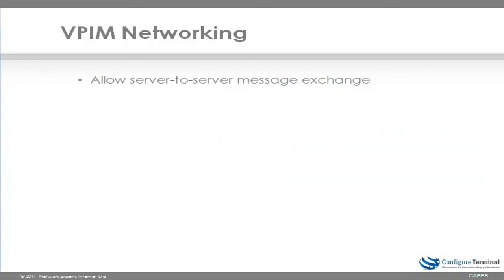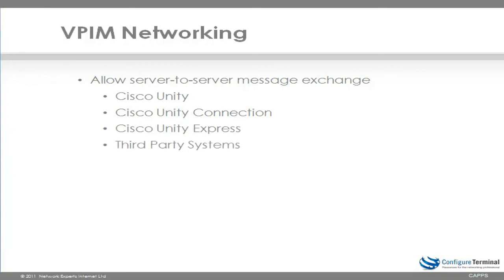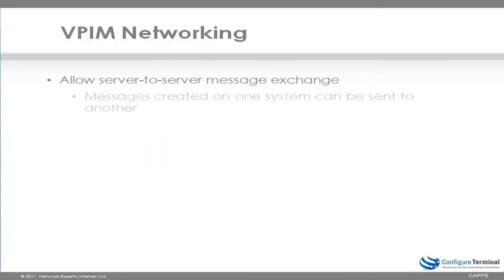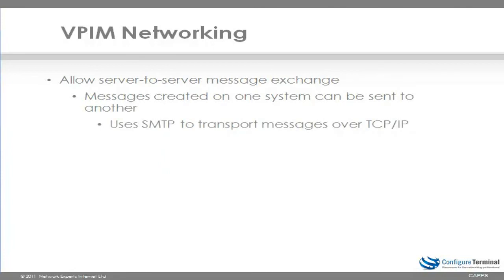So VPIM networking allows us to network or interconnect multiple messaging systems to exchange voice messages. Examples would be Cisco Unity Connection, Cisco Unity Express, and third-party messaging systems. RFC 3801 provides for standards-based interoperability between messaging systems. This is not PBXs or telephone systems making calls, but messaging systems sending messages to each other in a similar way to Microsoft Exchange sending email between email servers. Messages created on one system can be sent to another system. This uses SMTP to transport messages over TCP/IP. Simple Mail Transfer Protocol is an internet standard protocol for electronic mail transmission across an IP infrastructure.